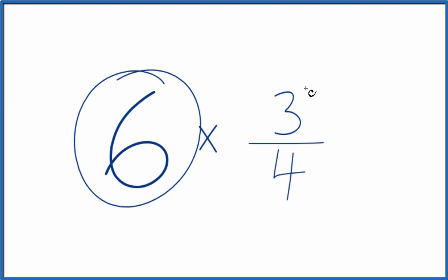Let's multiply 6 times 3 fourths. And here's how we do that. So you could just add 3 fourths together 6 times. That would give you the answer to 6 times 3 fourths.